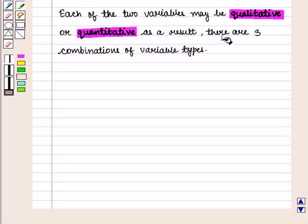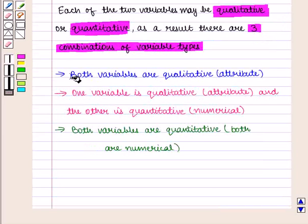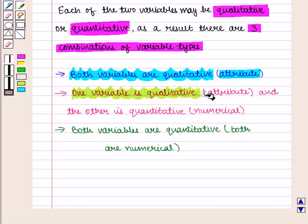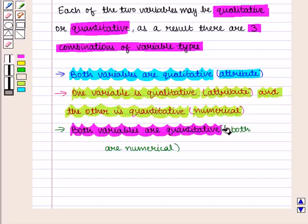As a result there are three combinations of variable types: both variables are qualitative, that is both are attributes; or one variable is qualitative, that is attribute, and the other is quantitative, that is numerical; or both variables are quantitative, that is both are numerical.